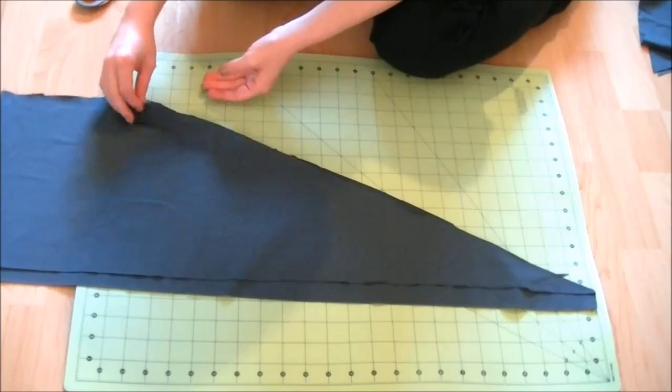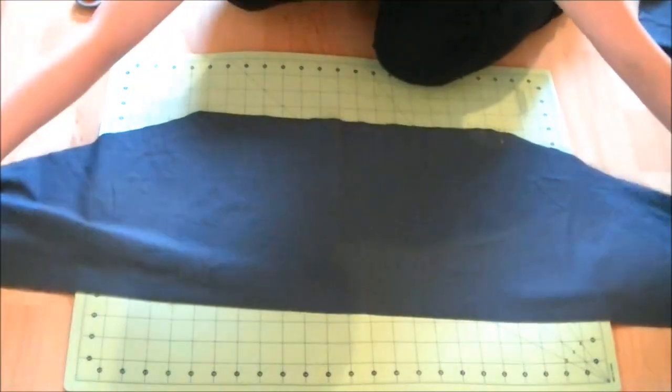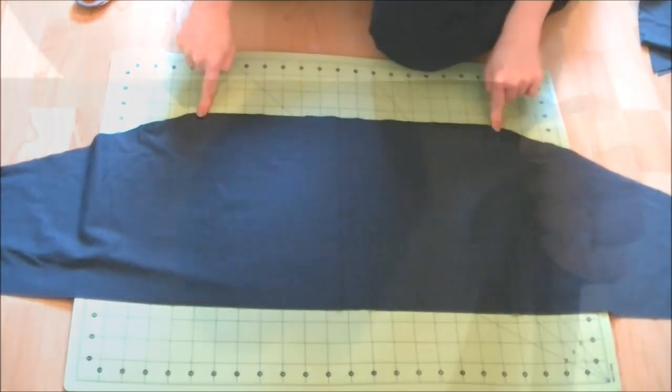Now unfold the fabric and just stitch about 2 and a half centimeters or 1 inch down from the pins and just turn it right side out. And that's it!